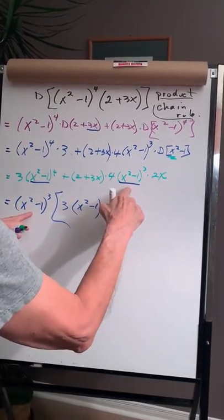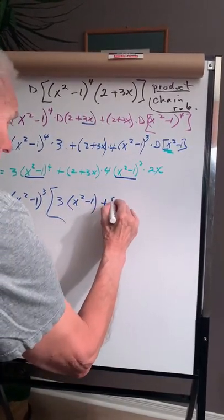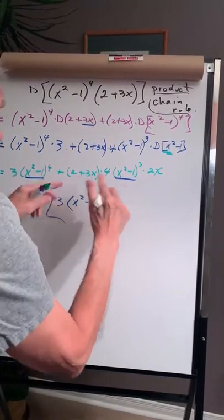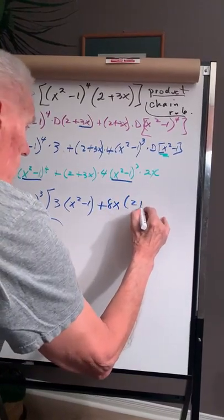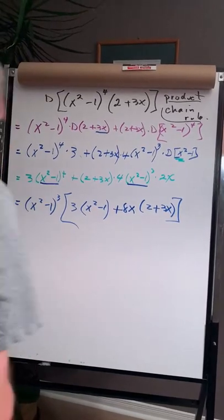Now, this is going to be gone, and I'm going to be left with 4 times 2 is 8x, and this is left over, which is 2 plus 3x. Okay, so we'll keep simplifying the problem.